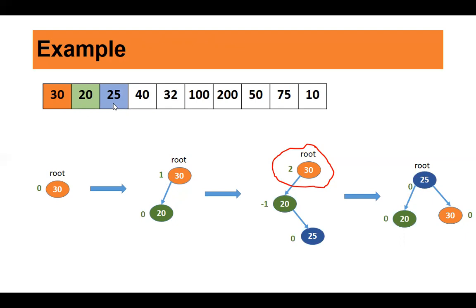Next, insert 25. Compare it with 30 — it is smaller than 30, so go to its left. It is greater than 20, so insert it as right child of 20. Now check the balance factor: 25 has balance factor 0, 20 is -1 because it has a right child, and the root 30 has balance factor +2 because it has 2 nodes on the left side. The root is now the imbalanced node, so we need to carry out a rotation.